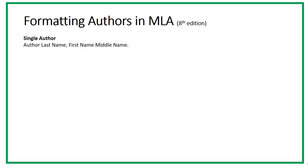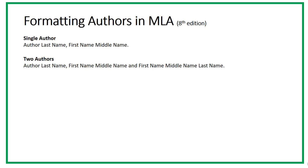In MLA, most citations begin with the author's complete name inverted, so put the author's last name followed by the first and middle names. If there are two authors, put the author names in the same order as on the publication, and invert only the first author's name, but not the second. Put the word 'and' between the author's names. If there are three or more authors, provide the first author's complete name inverted, followed by et al., which is an abbreviation for a Latin phrase that means 'and others.'